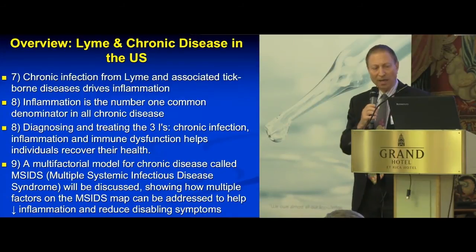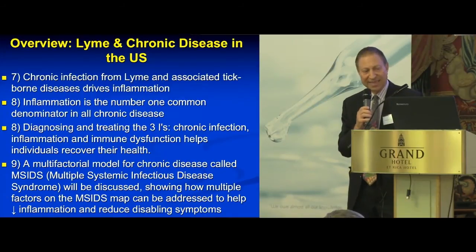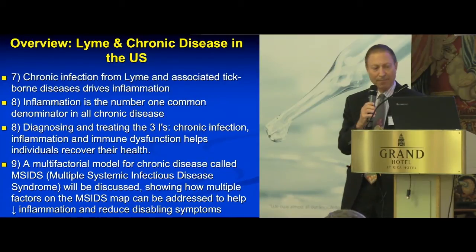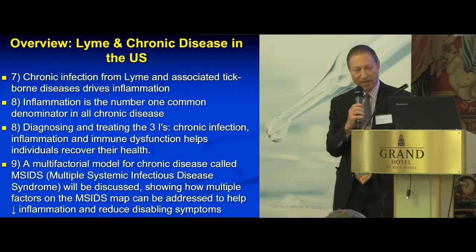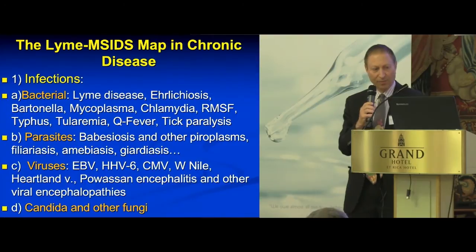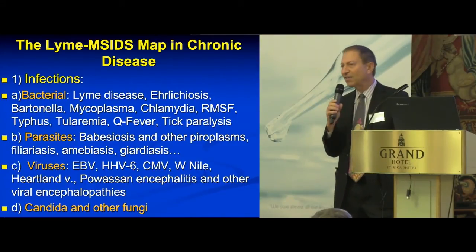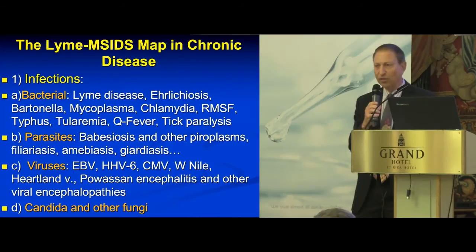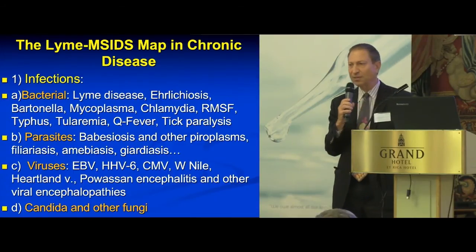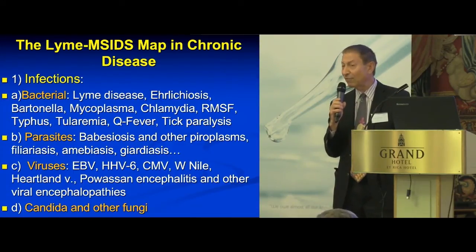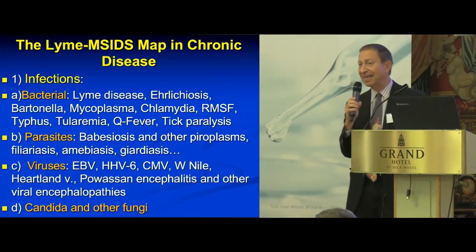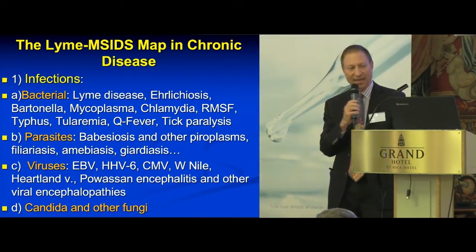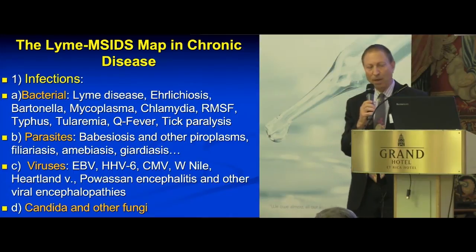This multifactorial model for chronic disease — mSIDS — I'm going to show you today how multiple factors on the mSIDS map can be addressed to decrease inflammation and reduce disabling symptoms. The first of the 16 points on the map is infections. We talked yesterday about bacterial infections. Many of my patients have several of these infections simultaneously, again not addressed in the double-blind, placebo-controlled studies by the NIH — multiple parasites,